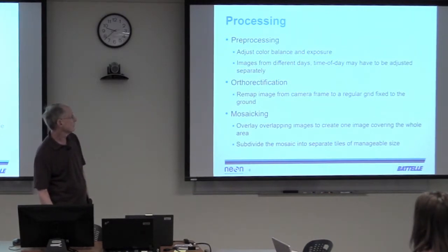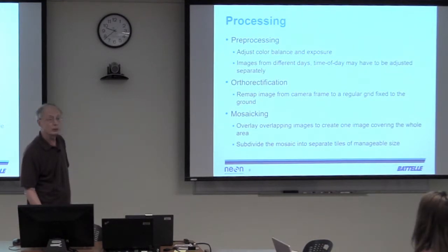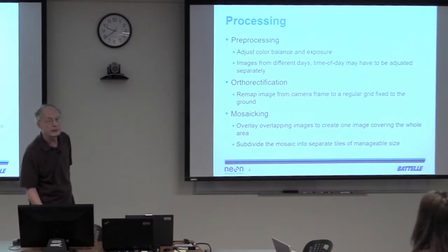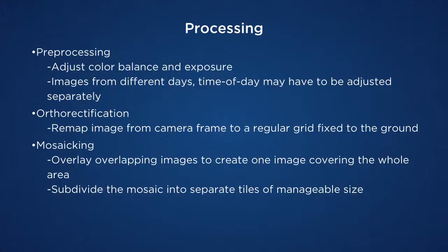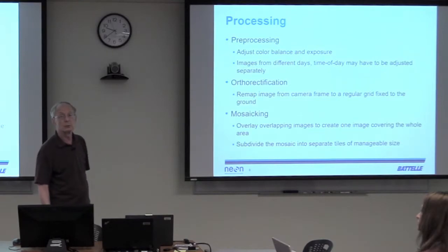The second step is orthorectification — you have to remap the image from the camera frame to a regular fixed grid on the ground, the same grid that the spectrometer is projected on, except at 10 centimeter resolution rather than one meter like the spectrometer. And finally, mosaicing. You could have 11,000 images over one site. Mosaicing takes all those images, overlaps them, and creates one single image. And because that single image is so large, you subdivide it into separate tiles which are one kilometer on a side.